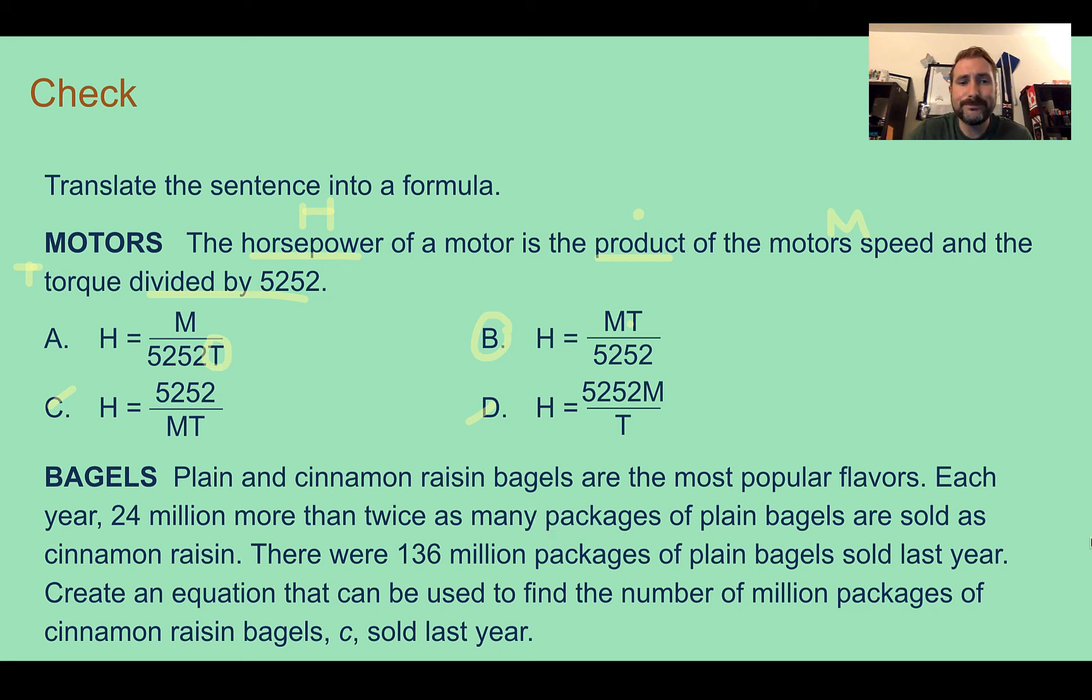For the second part, you should have wrote the equation 24 plus 2C equals 136. So 24 million more than, which implies plus, twice as many packages. There's our 2C and 136 million total. We get that equation.